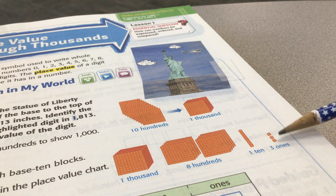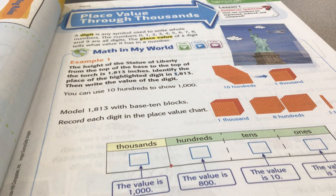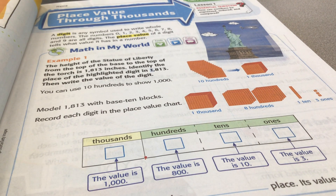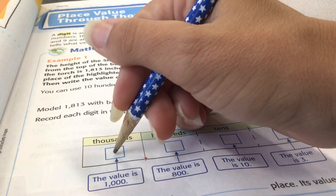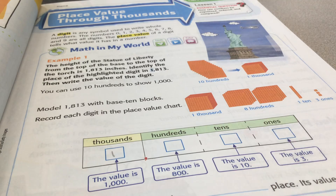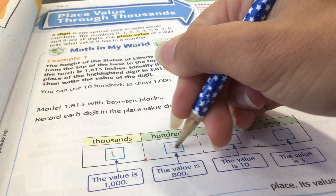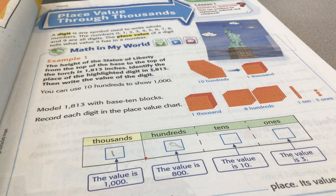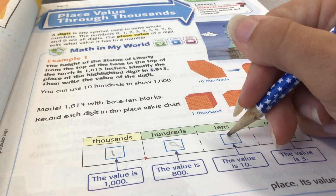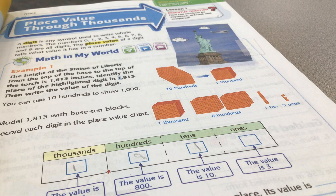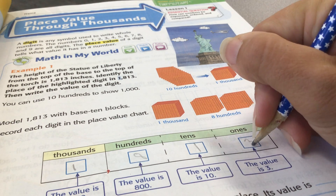There's 1 ten and 3 ones. If we write it out in expanded form, we would put thousands: 1; hundreds: 8 of those; tens: we had 1 ten, so it would just be 1; and 3 ones would be 3.